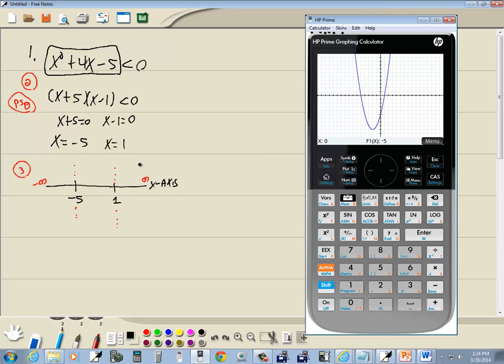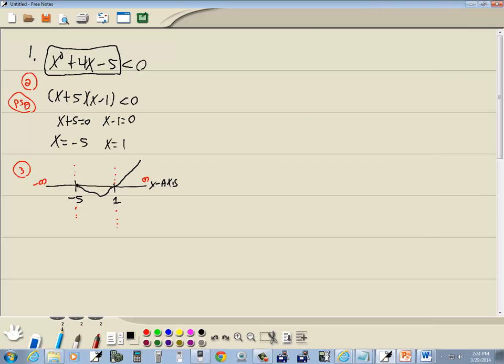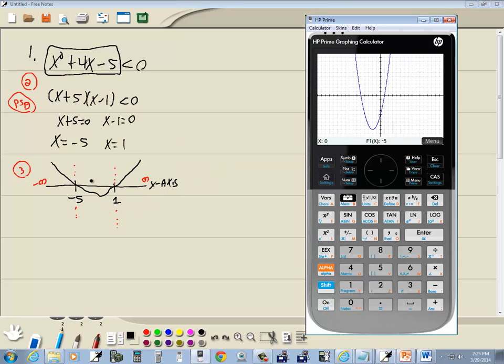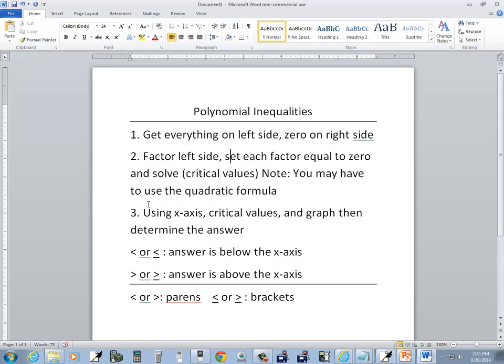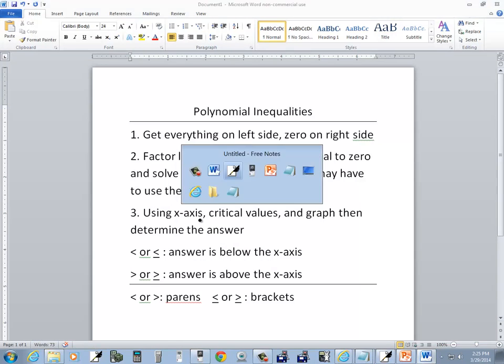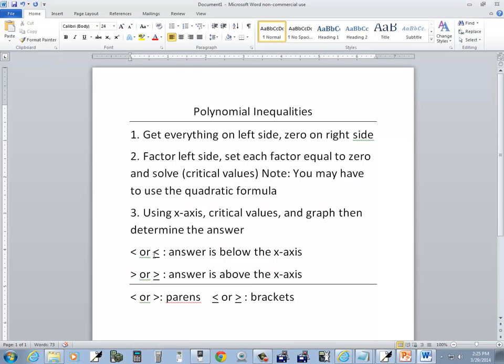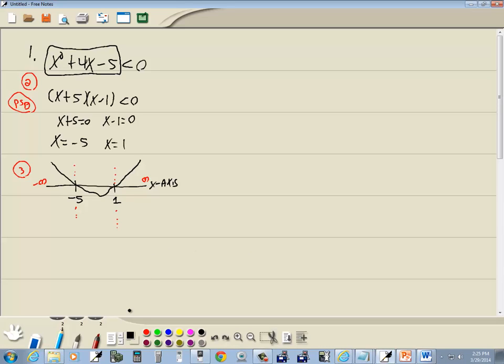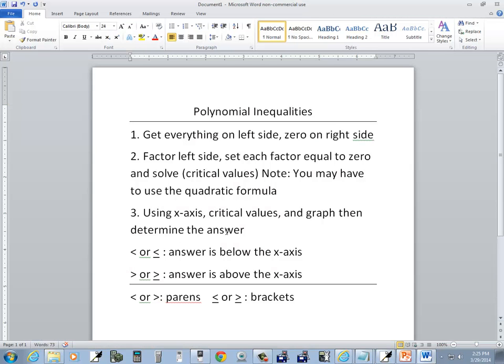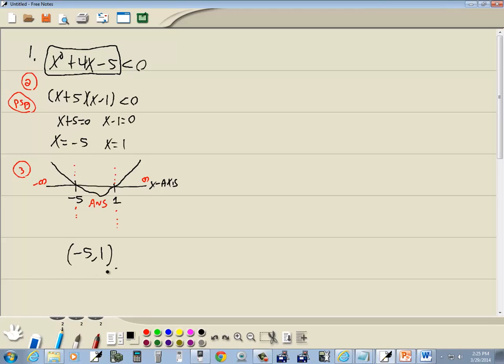So I'm going to sketch this on my paper here. So our graph looks like that right there. Now we don't care to make it precise. It's actually in some cases a lot easier if you make it imprecise. Okay. So using the x-axis critical values and graph then determine the answer. Our original problem was a less than. And this tells us that the less than the answer is below the x-axis. So we're looking where our graph is below the x-axis. Well in this interval it's above. And this interval it's above. But from negative 5 to 1 my graph is below the x-axis. So that interval there is my answer. So answer is going to be negative 5 to 1. And this is a less than. And less than says we're going to use parentheses on them. So we'll put parentheses around them. And that's our answer.